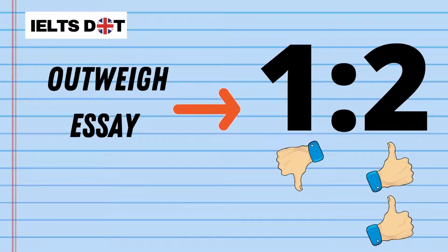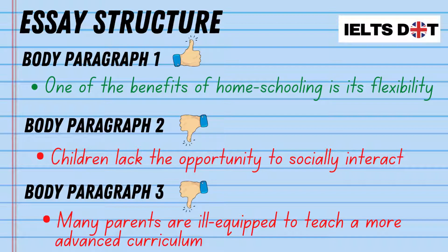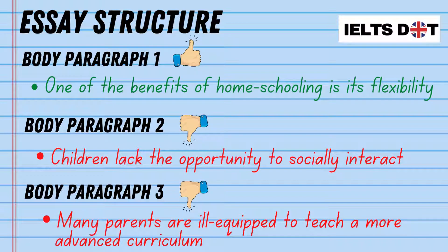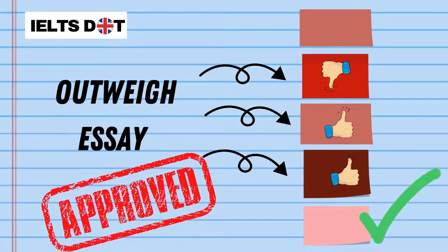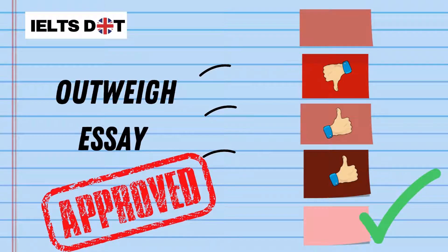In this essay, I'm going to argue that the disadvantages outweigh the advantages. For the advantage, I'll use: one of the benefits of homeschooling is its flexibility, which I'll write in the first body paragraph. For the two disadvantages, I'll use: children lack the opportunity to socially interact, and many parents are ill-equipped to teach a more advanced curriculum, which I'll write in the second and third body paragraphs respectively. It's very important to remember to write about the side that you personally oppose in the first body paragraph, and the two sides that you support in body paragraphs three and four.